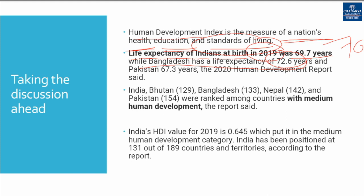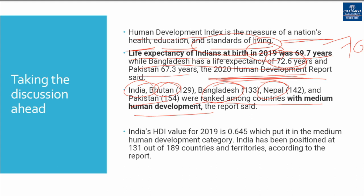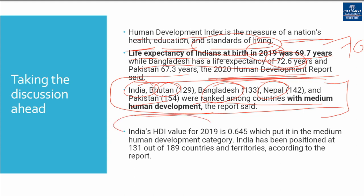Pakistan has 67.3 years according to the 2020 Human Development Report. India, Bhutan, Bangladesh, Nepal, and Pakistan were all ranked among countries with medium human development. India's HDI value for 2019 is 0.645, which puts it in the medium human development category, and India has got 131st rank out of 189 countries.